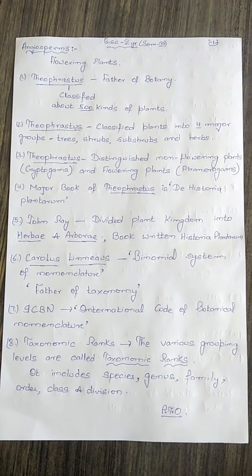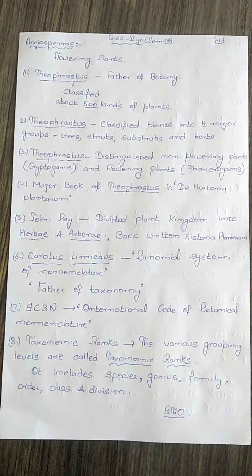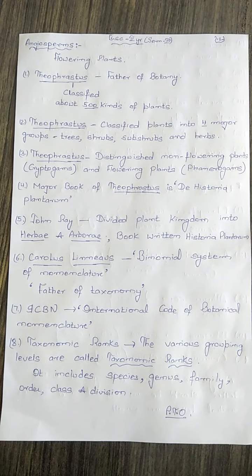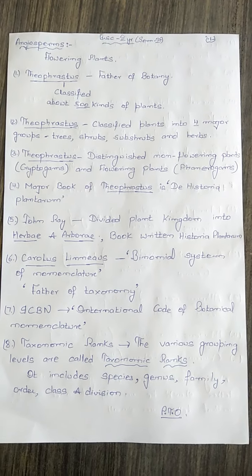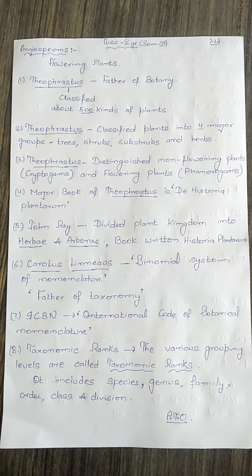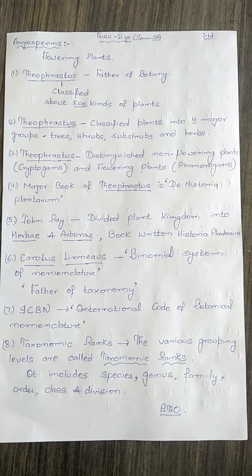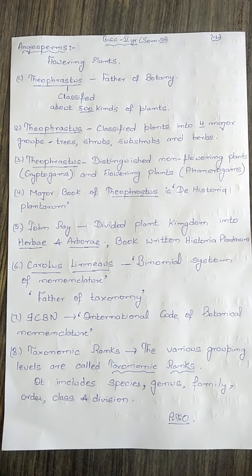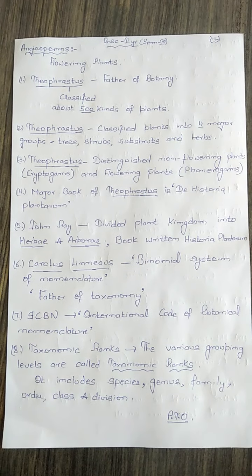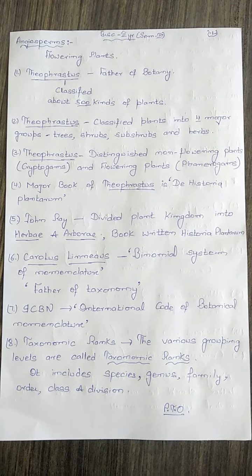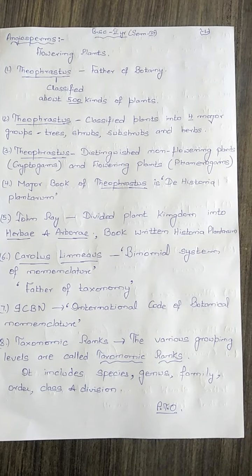The next scientist is Carlos Linnaeus. He gave the binomial system of nomenclature — also called binomial nomenclature — and is known as the father of taxonomy. ICBN stands for International Code of Botanical Nomenclature.